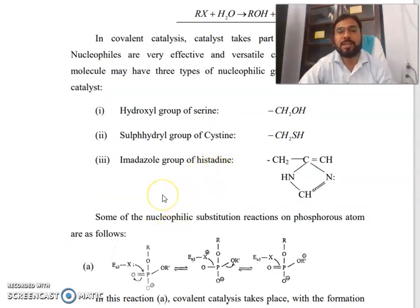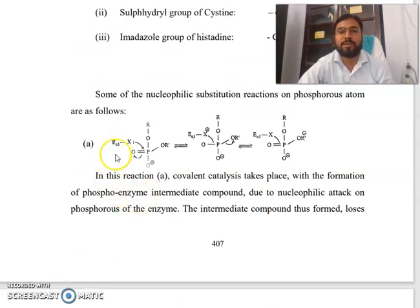Some of the nucleophilic substitution reactions on phosphorus atom are as follows. This is your phosphate and this is a very important center for biological molecules. You can see how it attacks on phosphorus and the breaking of phosphorus-oxygen level bonds.